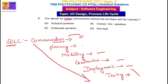How should we initiate communication between the developer and the customer? The answer is content-free questions. The planning and modeling phase involves technical questions, and there are also problematic questions and feedback options. But the communication between developer and customer is initiated through content-free questions.